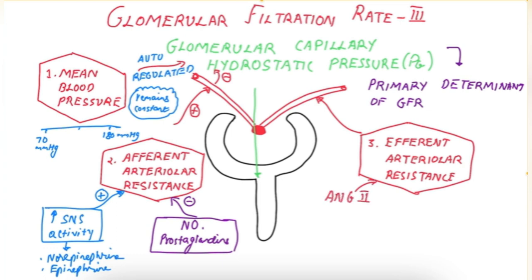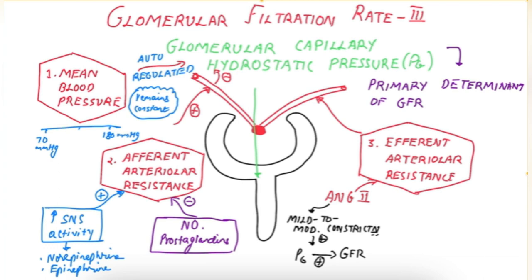Efferent arteriolar resistance is mainly affected by angiotensin 2, which has a biphasic effect on GFR. At mild to moderate constriction of the efferent arteriole, angiotensin 2 increases the glomerular capillary hydrostatic pressure and increases the GFR. However, if the constriction is severe — greater than 3 times — it increases the glomerular colloid osmotic pressure (PI-GC).